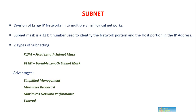Subnetting is the division of large IP networks into small logical networks. A subnet mask is a 32-bit number used to identify which part of the address is the network portion and which part is the host portion. There are two types of subnetting methods: FLSM, fixed length subnet mask, and variable length subnet mask. In this video, we are going to discuss fixed length subnet mask.